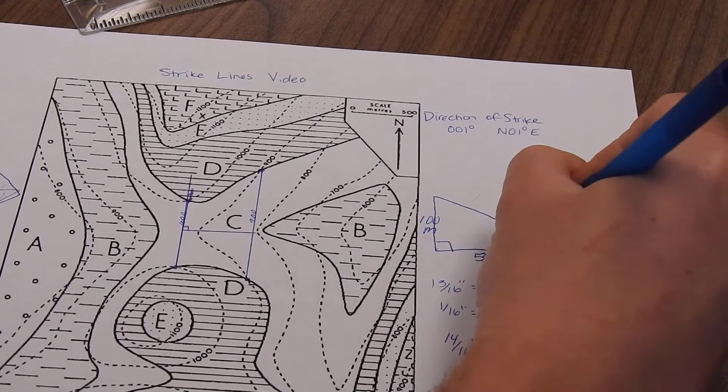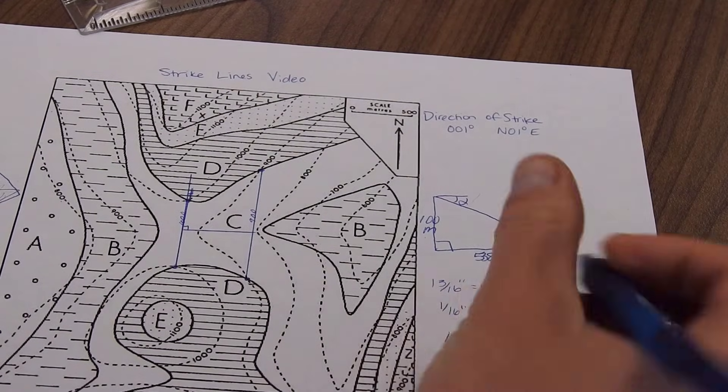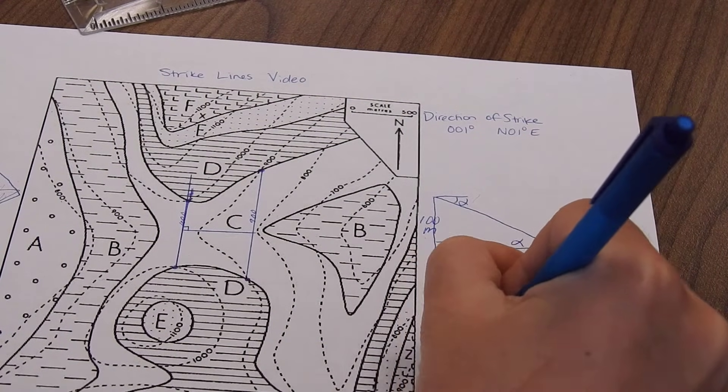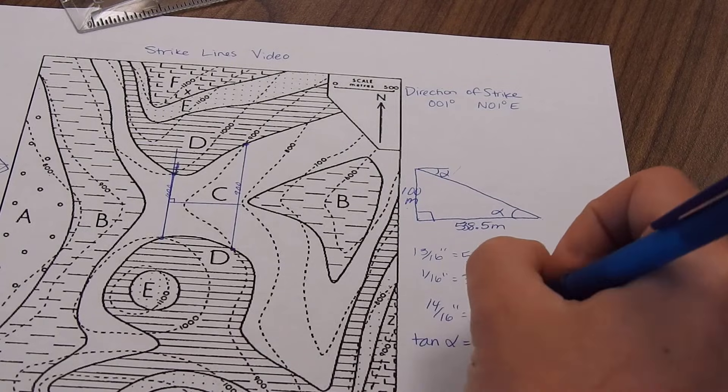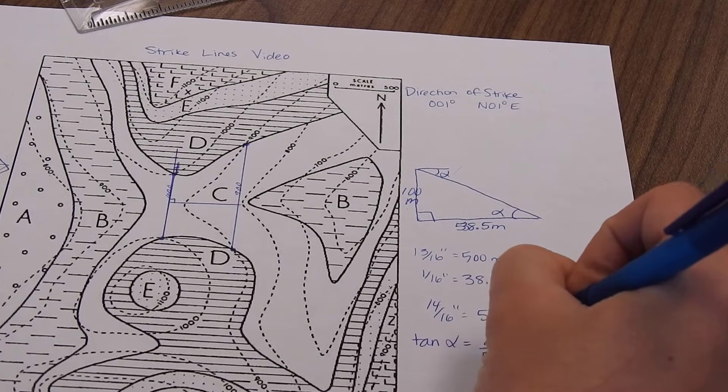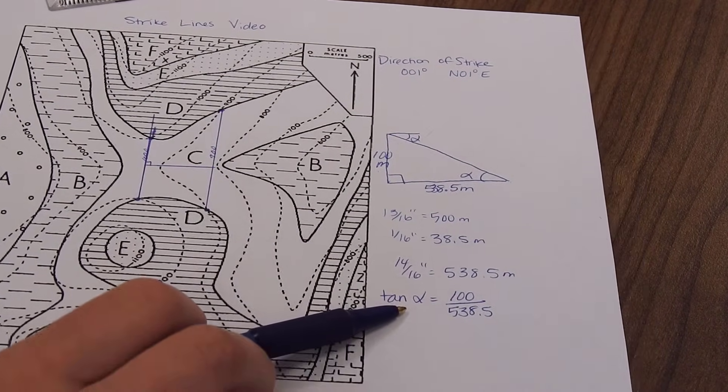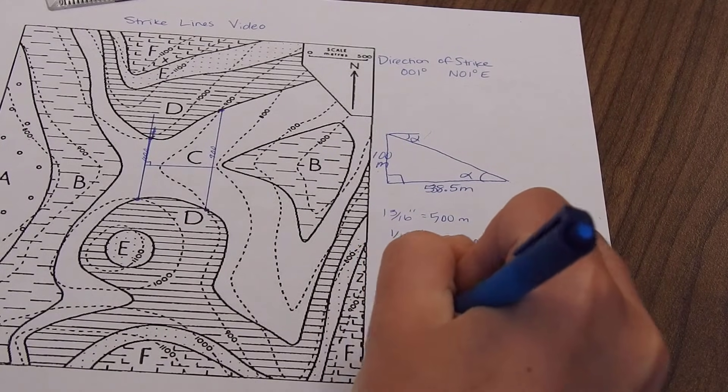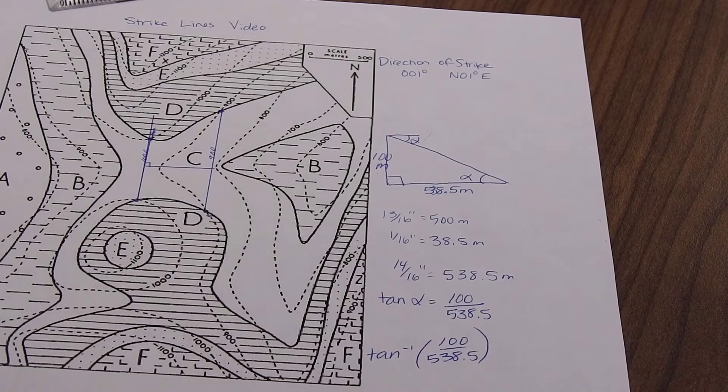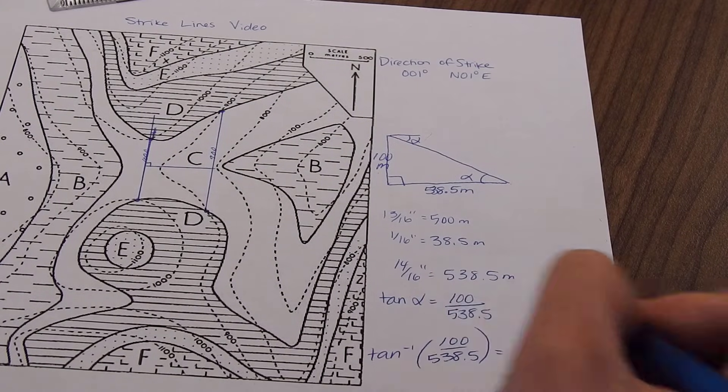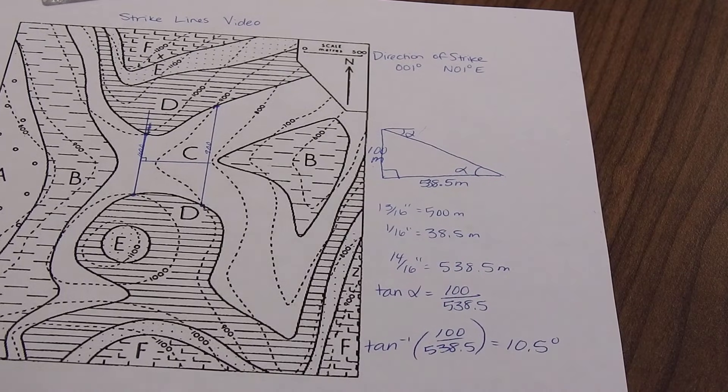And now we can use tangent to find that angle, which is our true dip. So tangent of the true dip that we want is equal to opposite over adjacent. So 100 meters over 538.5 meters. And now we're going to have to use inverse tangent to get that angle back. If you're going to use your calculator for this, make sure that you are set for your answer to come out in degrees. Otherwise, you're going to have a really tiny angle. And I get 10.5 degrees.